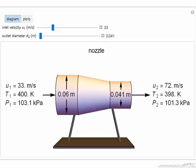So here we're looking at the interactive simulation, and we're in a condition where it's a nozzle, meaning the outlet diameter is smaller than the inlet diameter. And so notice the velocity increases, so we have more kinetic energy, and correspondingly the temperature decreases slightly, and the pressure decreases.